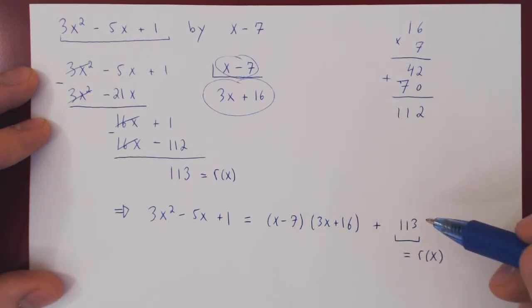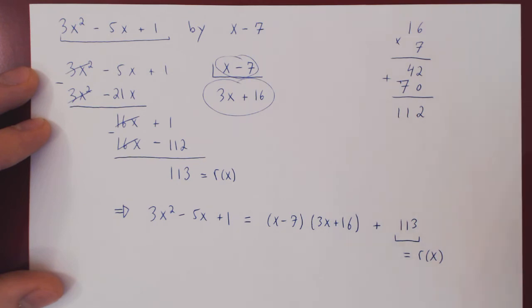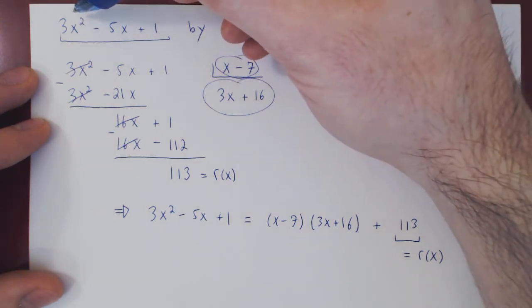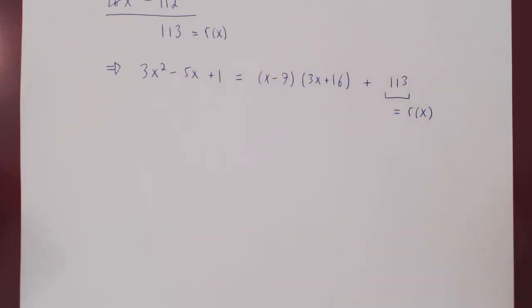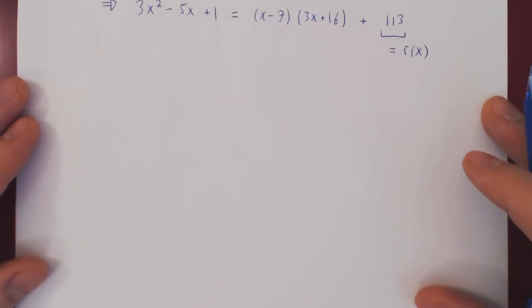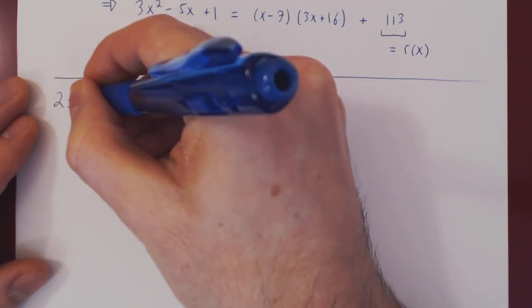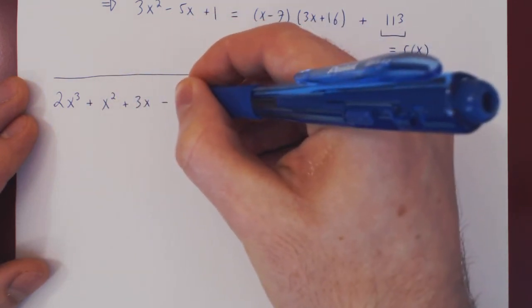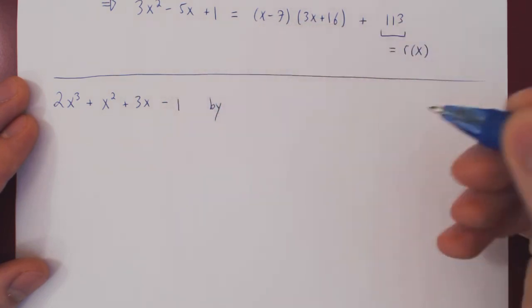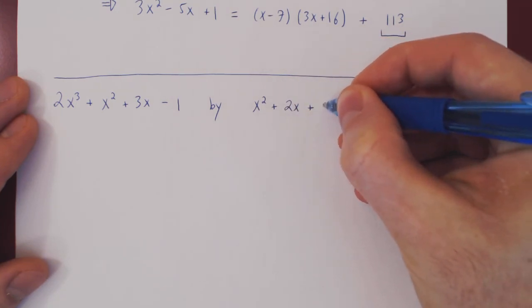Before, this term wasn't there in the previous two examples as the remainder was 0. Let's do one more example where we take a cubic polynomial and divide by a quadratic polynomial.